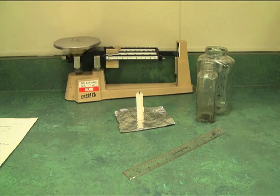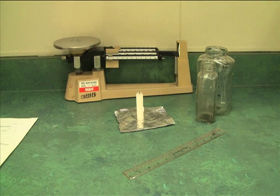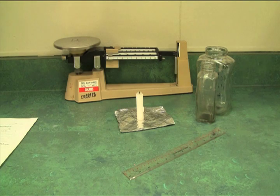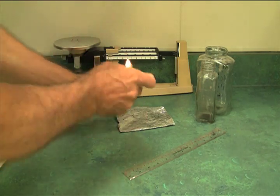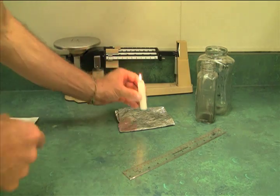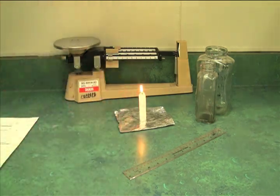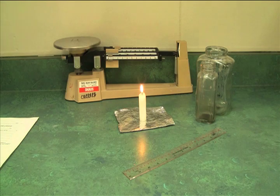Step four says, now light your candle and observe the flame closely. Draw a diagram of the flame showing its shape and labeling the different colors. So there's our candle. I'll zoom in so that we can get a close-up of that.